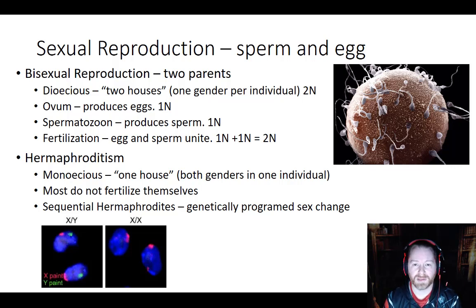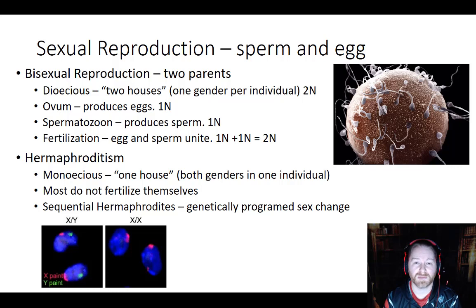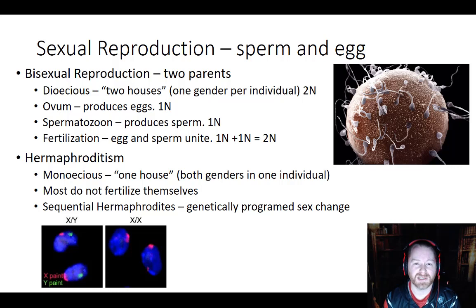Some other terms: the ovum, which produces eggs — it's not the egg itself but the structure that produces eggs — and the spermatozoon, which produces sperm. In humans these would be the ovaries and the testes. The eggs and sperm produced are haploid. Fertilization is the combination of egg and sperm — when the nuclei of the egg and sperm fuse together to go from haploid back up to diploid.